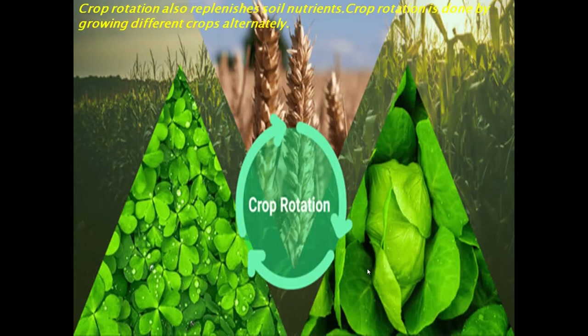Another method to stop soil infertility and get good yield is crop rotation. Crop rotation replenishes soil nutrients and is done by growing different crops alternately in the same field. Farmers in Northern India used to grow legumes as fodder in one season and wheat in the next season, which helps in the replenishment of soil with nitrogen.